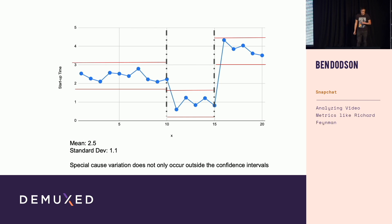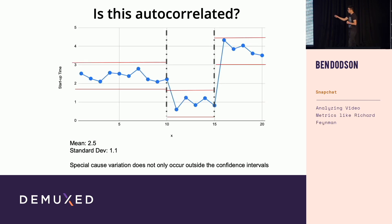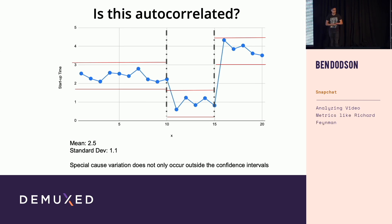Can you do statistical tests now? The thing is, p-values and statistical tests make a lot of assumptions. You have to ask yourself whether your data actually meets those assumptions. For example, is this data autocorrelated? It's a time series, so it probably is. And this data clearly is autocorrelated. If there's autocorrelation, you have to make adjustments to your statistical test. Even though this is a nice Gaussian distribution, you can't run a t-test and assume the results are valid without making that adjustment.